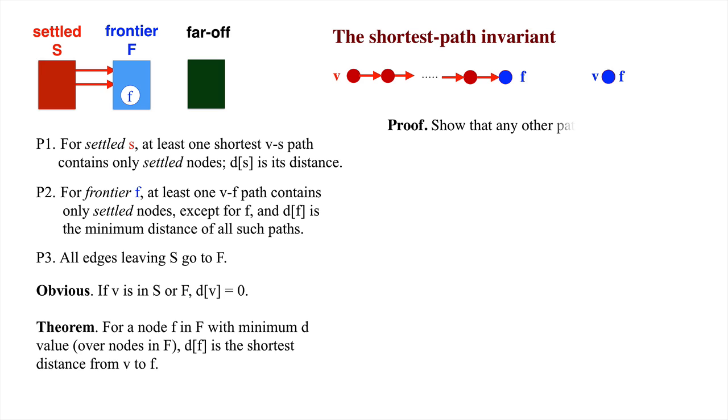We prove this theorem by showing that any other path from v to f does not have a smaller distance. We consider two cases. Case 1: v and f are the same, and that node is in the frontier set.